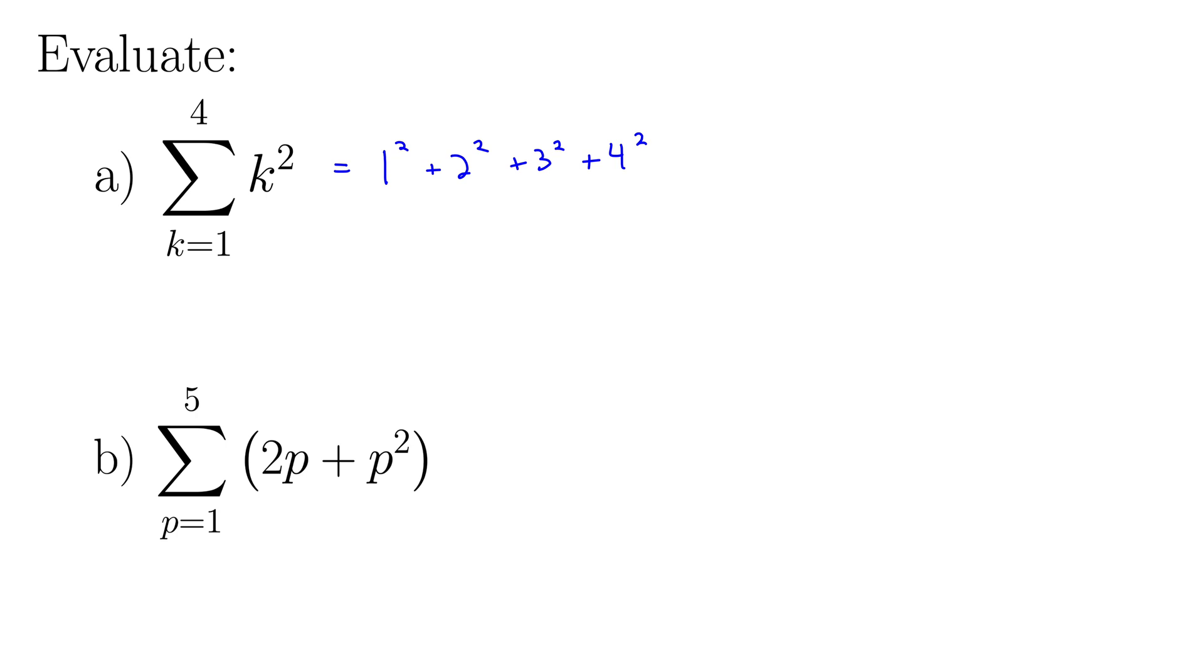So we have 1 squared plus 2 squared plus 3 squared plus 4 squared. We started at 1, we stop at 4. Now we add all these up. So this gives us 1 plus 4 plus 9 plus 16, which comes to 30. So this notation may look a little intimidating, but it represents something really quite simple.